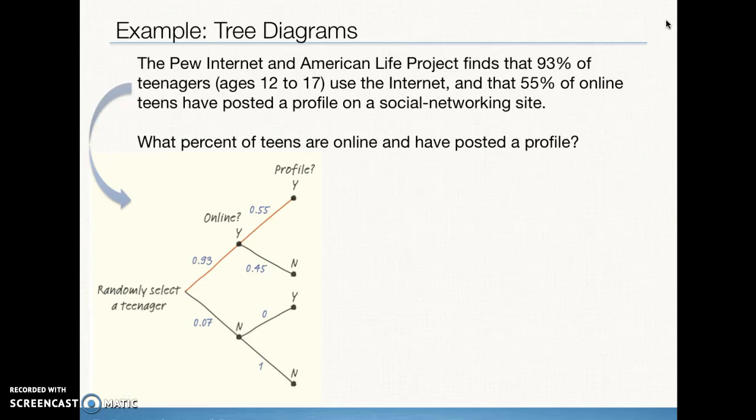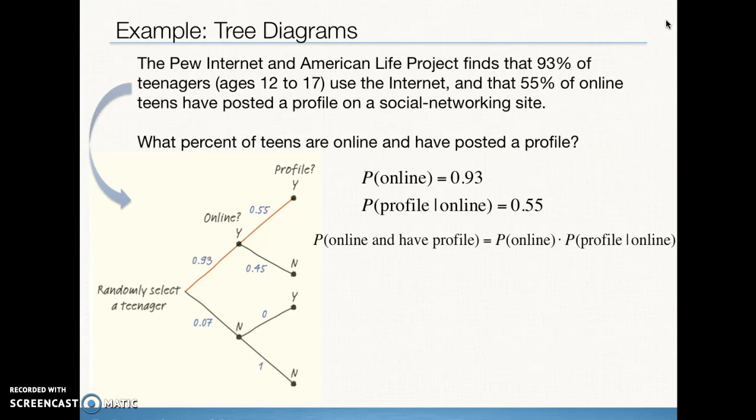We start out by splitting up the online teens and the non-online teens, that 93% and 7% that we just talked about. And then again, of that 93%, we break down into having an online profile, 55%, not having one, 45%. Now, when we look at the teens who don't use the Internet or are not online, obviously none of them have a profile and all of them don't have a profile. So that's that bottom branch with the .7. So if we want to know what percent of teens are online and have posted a profile, then we are going to write it in probability notation using either the AND word or the intersection symbol. And we know that the probability is going to be the probability of teens who are online, the 93%, multiplied by the probability of teens having a profile knowing that they're online, or the 55%. So that gives us a 51% probability of teens being online and having posted a profile.